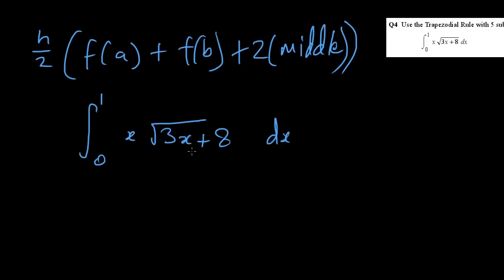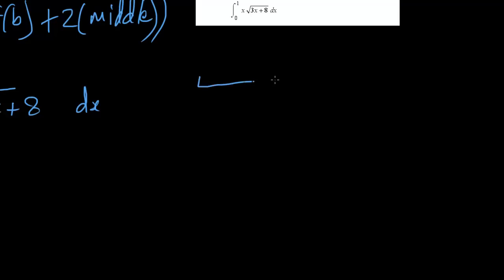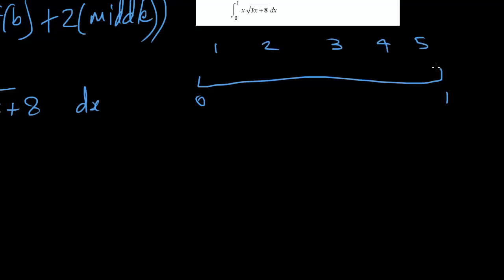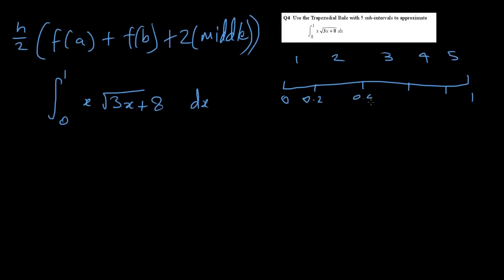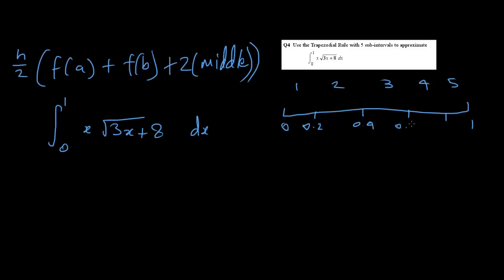It says 5 sub-intervals. The first thing I'll do is draw a number line from 0 to 1. I need 5 sub-intervals, so that's 5 gaps with 4 internal points. All together I have ordinates at 0, 1, 2, 3, 4, and 5. If you divide 1 by 5, it's 1 over 5, so it's going up by 0.2. This gives x-values of 0, 0.2, 0.4, 0.6, 0.8, and 1. These are your ordinates — ordinate 1 through 6.